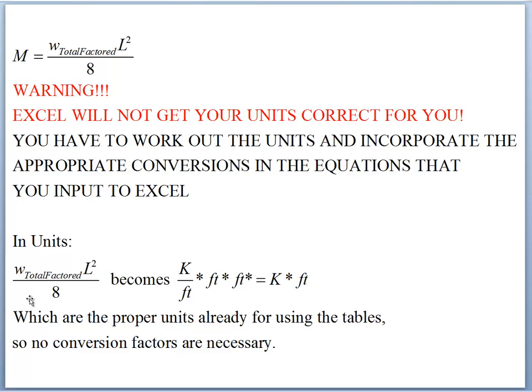The formula is W times L squared over 8, which is kips per foot for W, and foot times foot for L squared. That foot cancels, leaving units of kip-feet — which is the unit in which moment capacity is expressed. So we don't actually have any conversion factors, but it's still important to go through this unit check to confirm whether we have conversion factors or not.